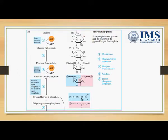The very first step is glucose being converted into glucose-6-phosphate with the help of the enzyme phosphofructokinase-1. The second step comprises glucose-6-phosphate being converted into fructose-6-phosphate by the enzyme phosphofructose isomerase.